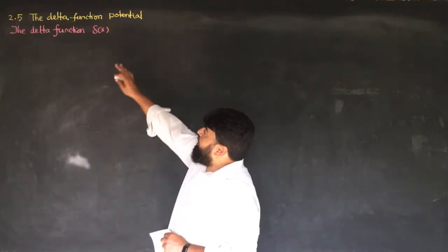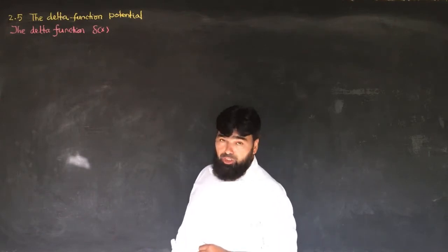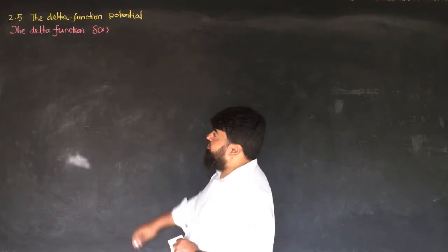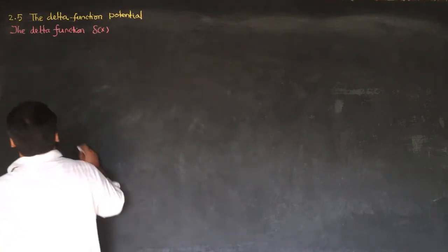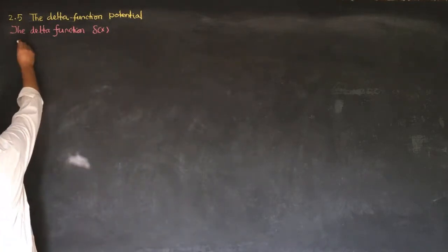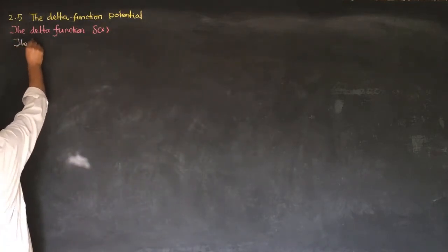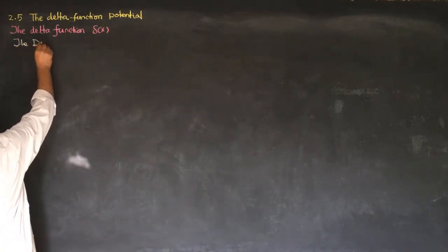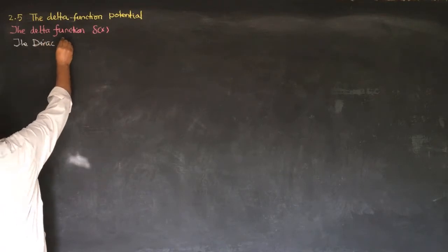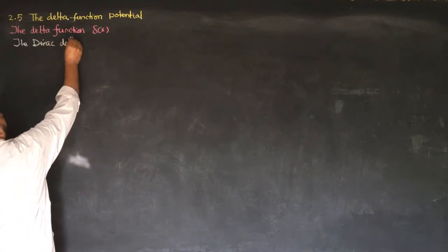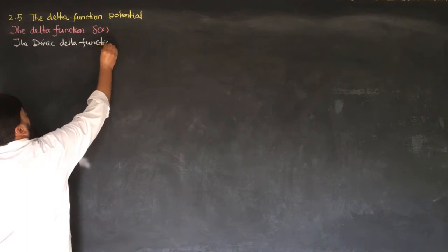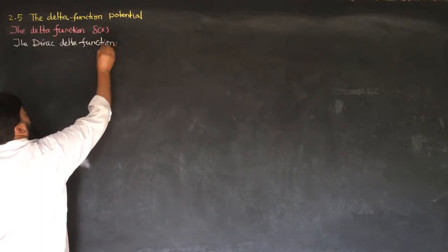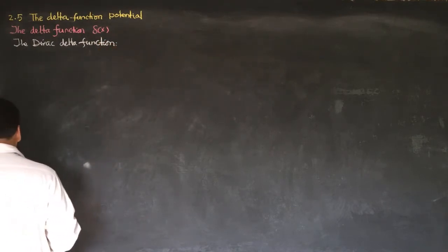Before going into the delta function potential, let me first discuss what is the delta function. This is also called the Dirac delta function. The Dirac delta function is not exactly a function but it behaves like a function. It is also called a peak function or a spike function.